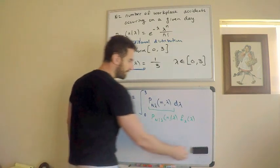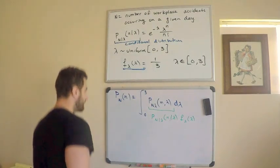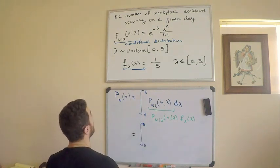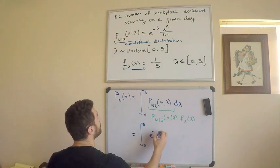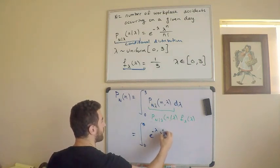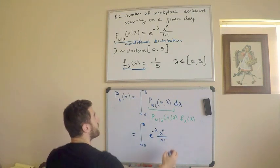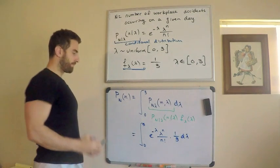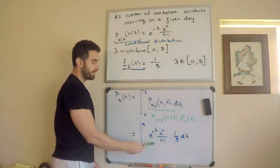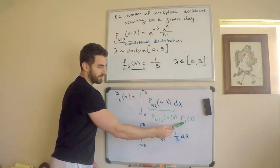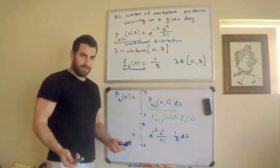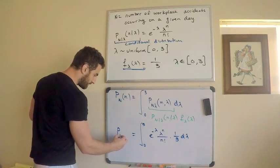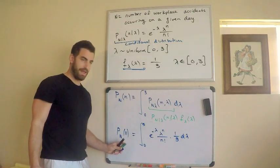So we pretty much have it. I'm just going to fill these pieces in. So now this is equal to the integral from 0 to 3, okay, of e to the negative lambda, lambda to the n, over n factorial, times one-third d lambda. So hopefully you can see I have the original conditional here and I have my marginal distribution f of lambda here, right? So we pretty much have everything. This would be my unconditional marginal mass function, the probability mass function of n, okay?